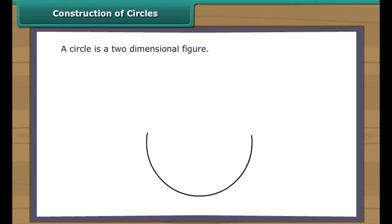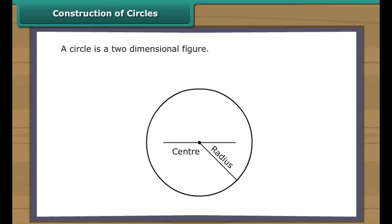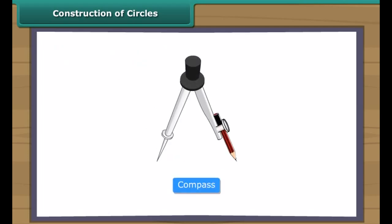Construction of circles. A circle is a two-dimensional figure. Every circle has a centre. The distance between the centre and the boundary of a circle is known as its radius. The line segment through the centre of a circle with its end points touching the boundary is known as the diameter. The diameter of a circle is twice its radius. We draw circles with the help of a compass.